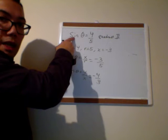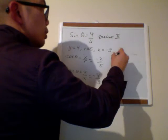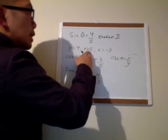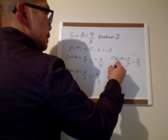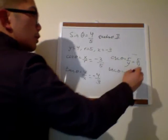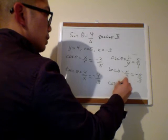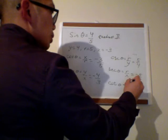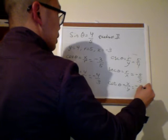Cosecant is the reciprocal of sine. So if sine was y over r, cosecant is r over y — that's 5 over 4. My secant is r over x, so that's 5 over negative 3, which is negative 5 thirds. And my cotangent is the reciprocal of tangent, so it's x over y — that is negative 3 over 4.